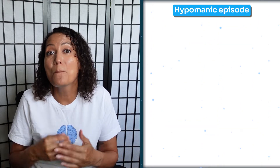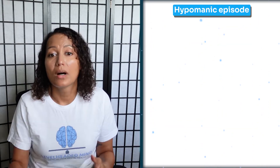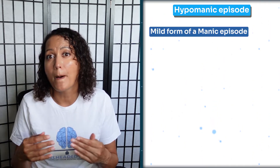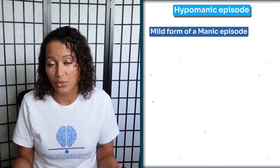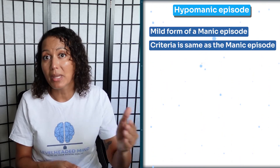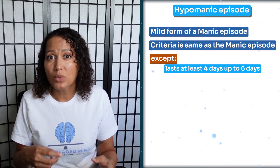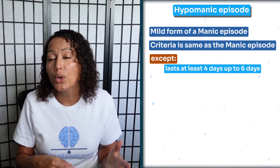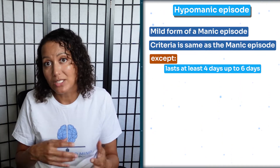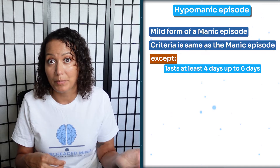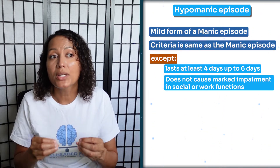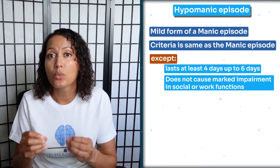So what is a hypomanic episode? A hypomanic episode is considered a mild form of mania because it has the exact same criteria as the manic episode, except it only lasts four to six days — not a full week, which would make it a manic episode. It also won't cause that marked impairment in social and work function.